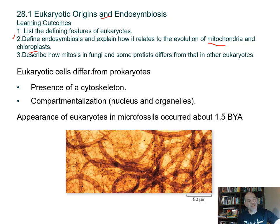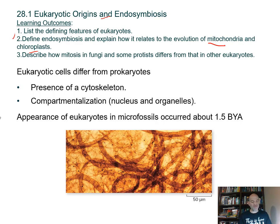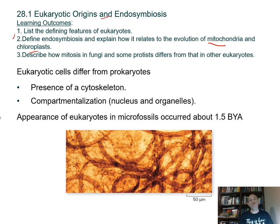We also need to describe how mitosis in fungi and some protists differs from that seen in other eukaryotes. More specifically, the kind studied as a model in Biology 1 — we saw that during mitosis, the nuclear envelope disintegrates or disappears during the process of separating chromosomes.